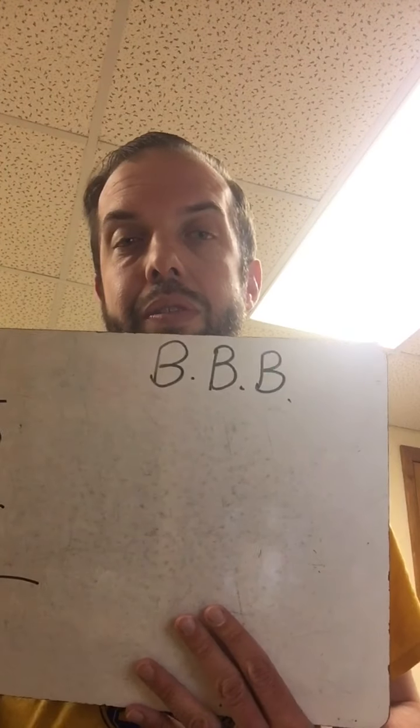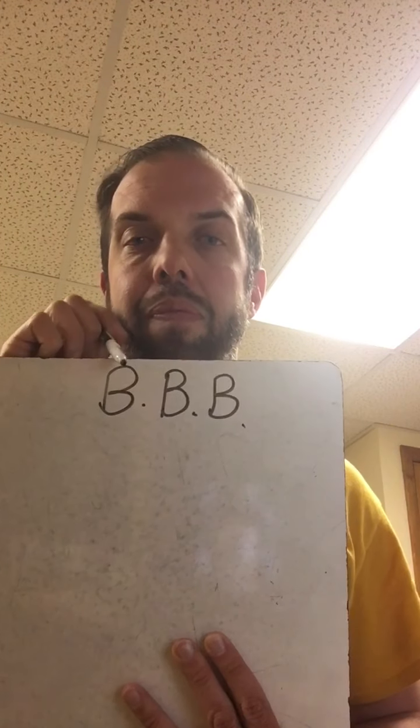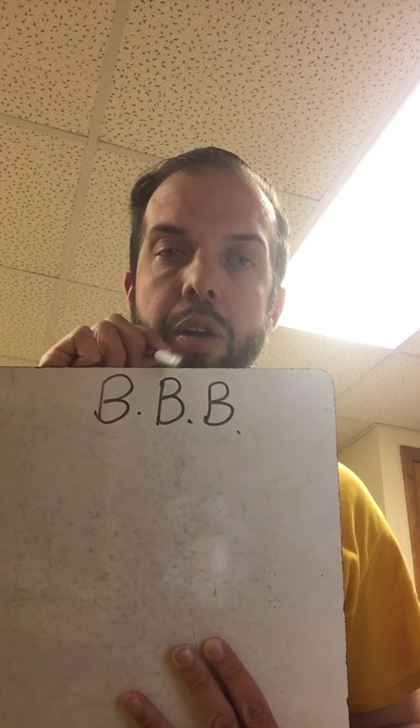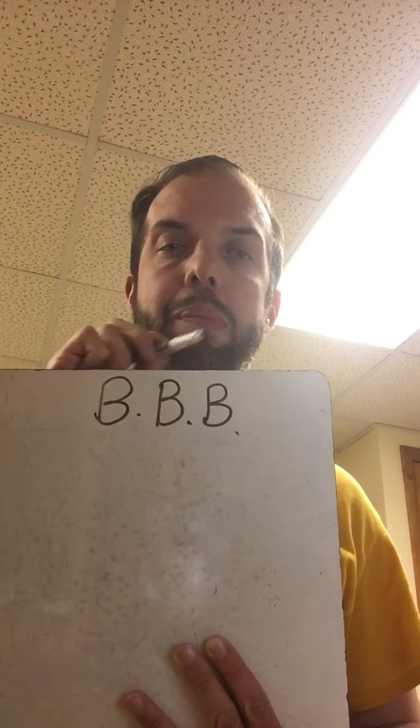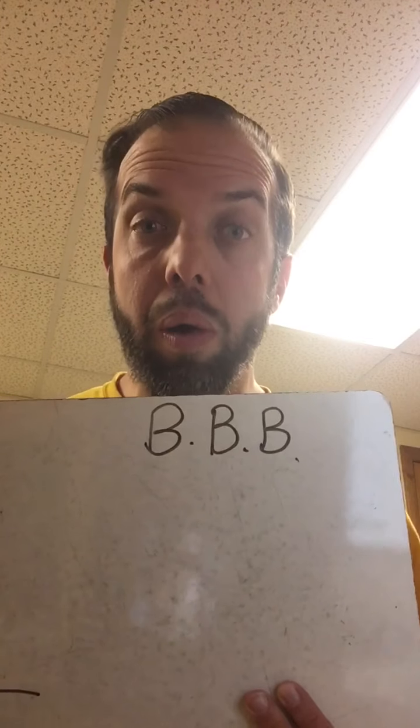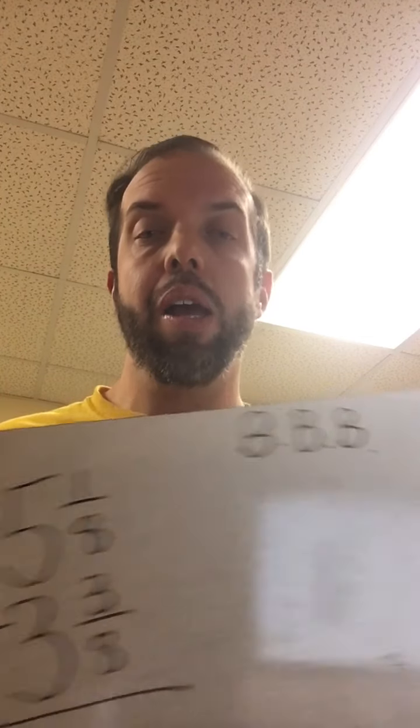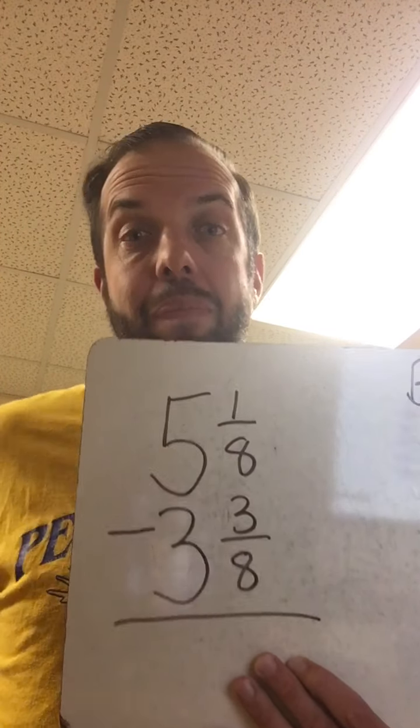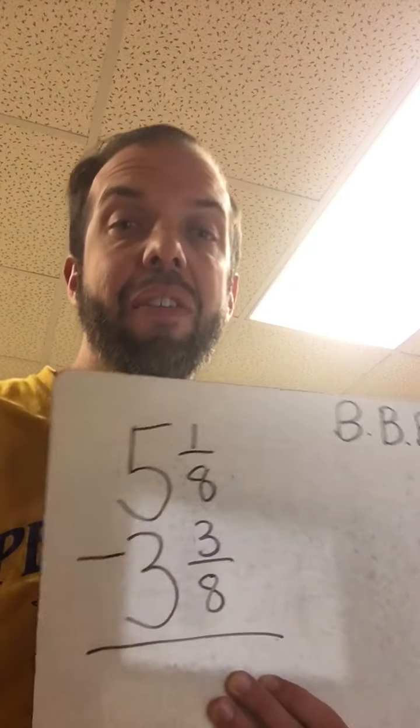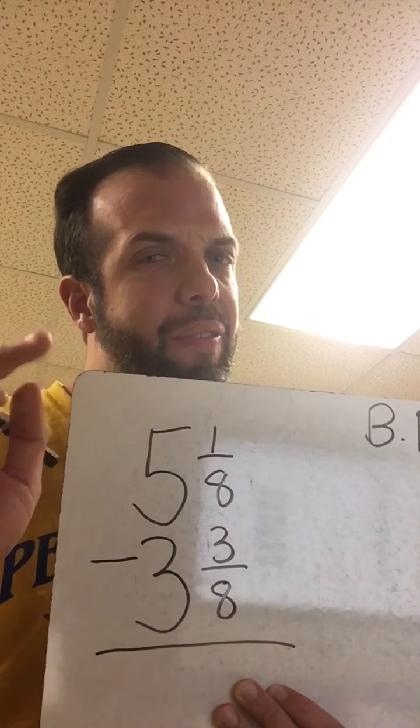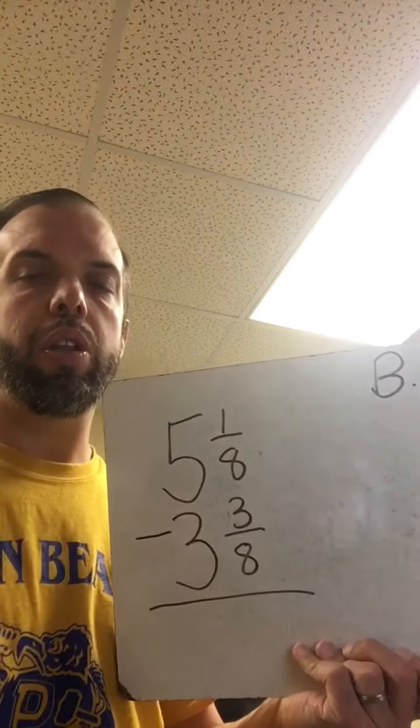Which brings me to this, okay? This stands for, it's in your notes, bottom, bigger, borrow. BBB. If the bottom's bigger, borrow. Always the case. Always. If it's not bigger, then you just subtract. Alright? But in this problem, bottom is bigger, so we have to borrow. Very similar to whole number world, but there's a few differences. Alright? So I'm going to show you those differences now.